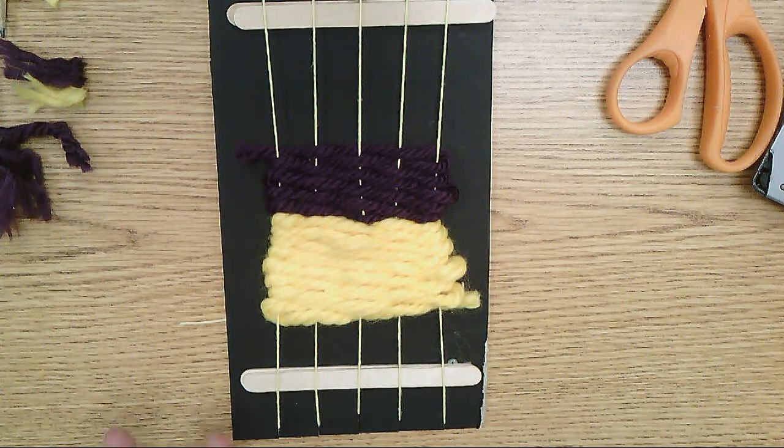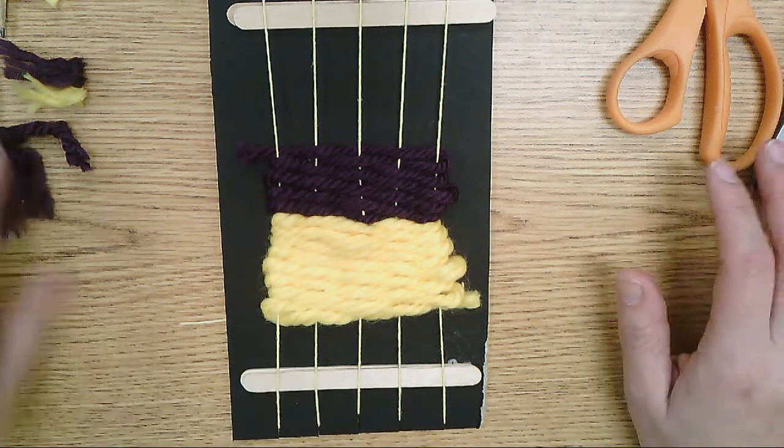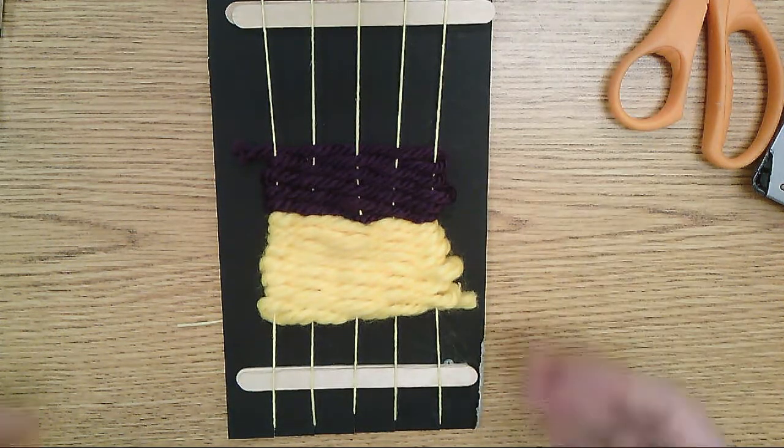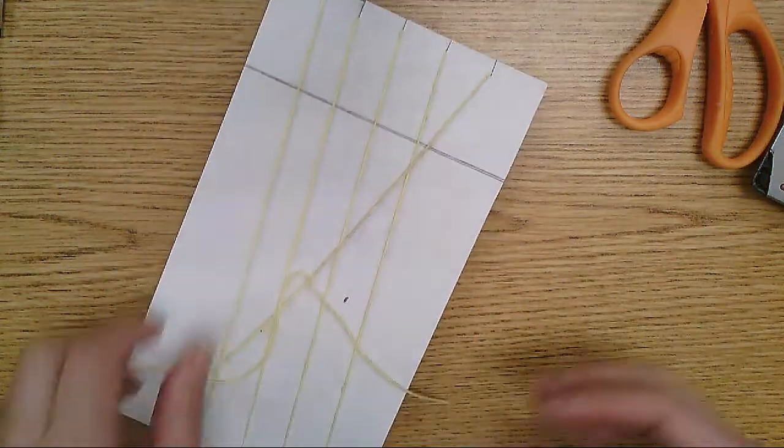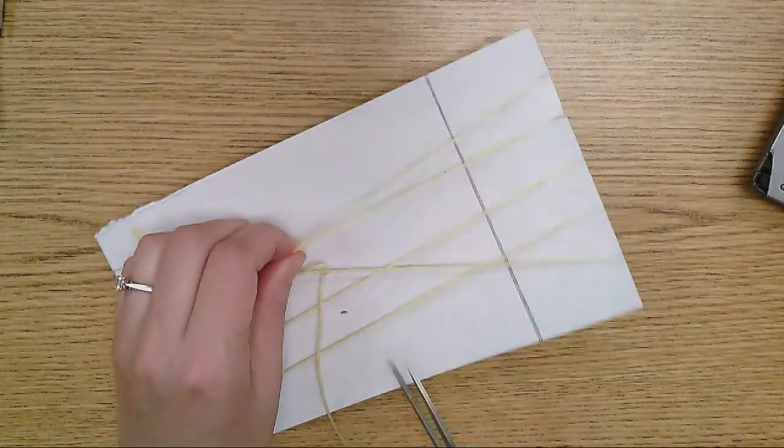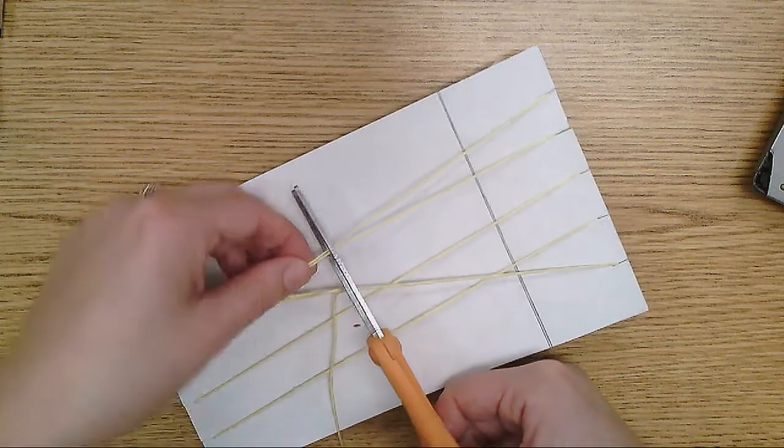Now we're going to finish our weave. I'm going to pretend I'm all the way done and this whole thing is filled in. What I'm going to do is turn it over and cut two strings next to each other from the back at a time. I'm not cutting all of them, just two at a time. Actually, I'll cut three and then two.